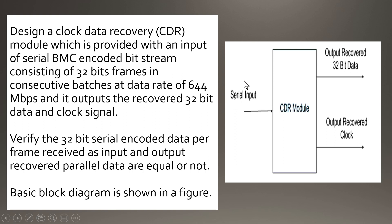Data at this bit stream is coming in the form of frames, and each frame consists of 32 bits of data. The data rate at this serial input is 644 Mbps. So this was all about the input side.